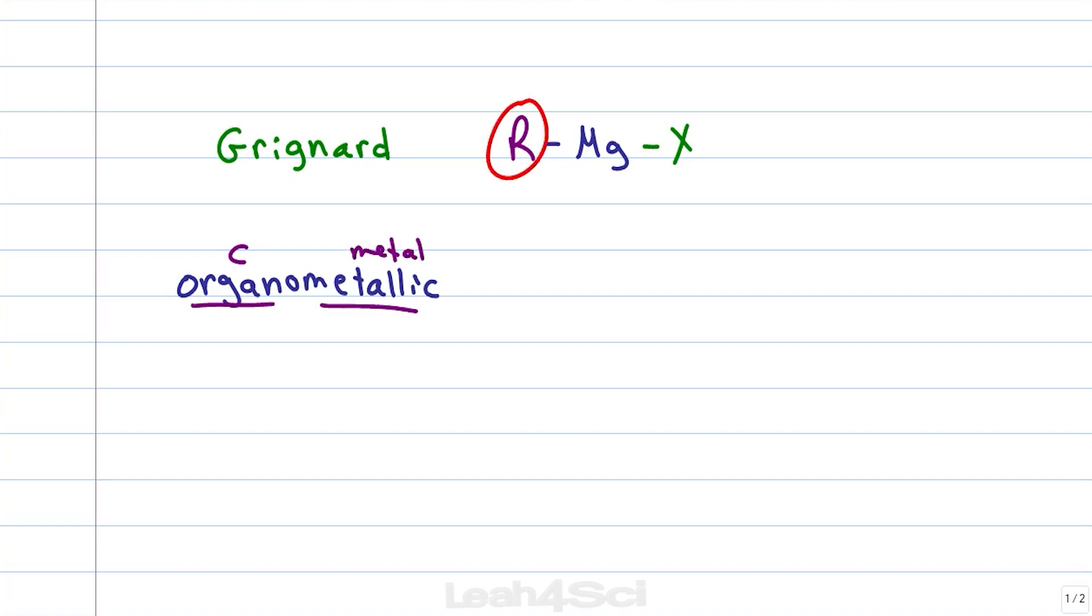in this case the carbon bound to the magnesium metal has such a difference in electronegativity that the magnesium becomes very partially positive making that carbon very partially negative almost to the point of being a carbanion. A carbanion is a carbon with a negative charge, a very unhappy group and therefore very reactive.